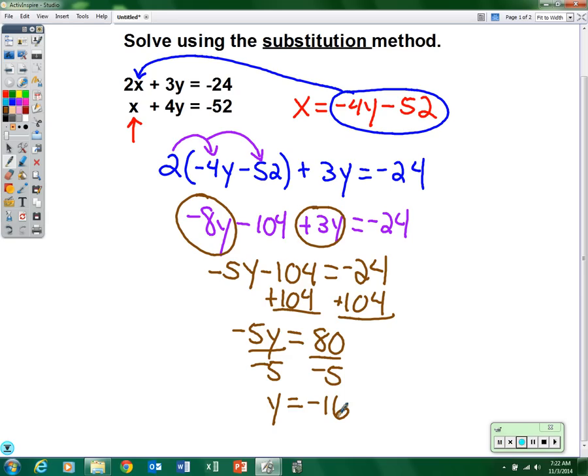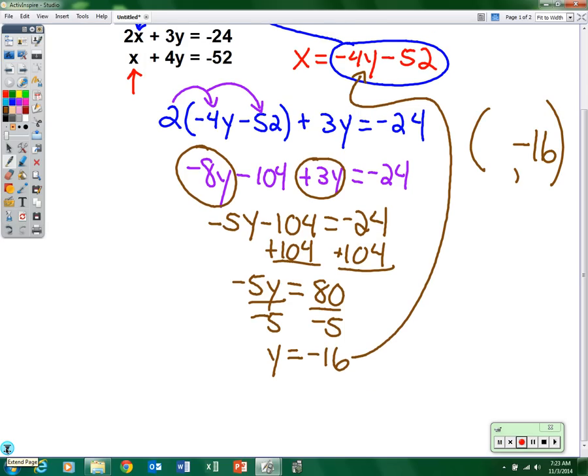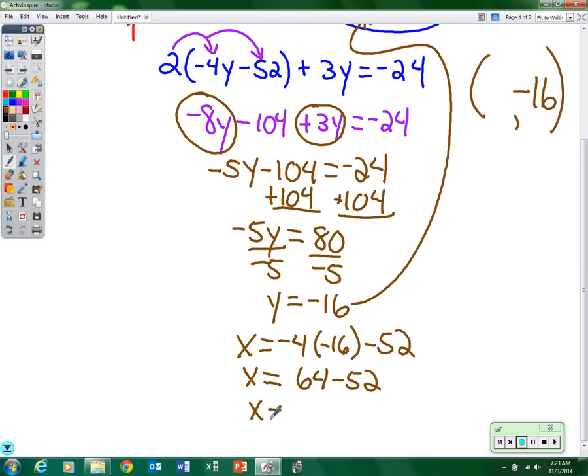Now we have to figure out what x equals. We're not done yet because we need an ordered pair answer. We figured out what the y is, it's negative 16. Now we need to figure out what x is. Well, the easiest equation to figure that out is the one that we used right here. Plug the negative 16 in for y because you already have x by itself. So x equals negative 4 times negative 16 minus 52. Solve for x. So negative 4 times negative 16, that becomes 64. So x equals 64 minus 52. And finally 64 minus 52 is 12. X equals 12.